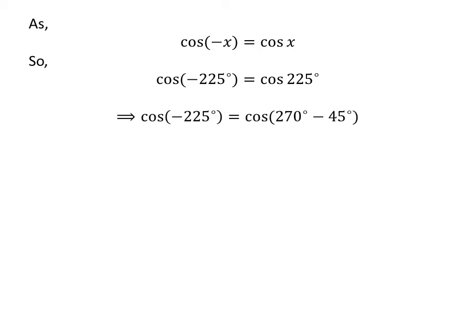As 225 degrees is equal to 270 degrees minus 45 degrees, cosine of minus 225 degrees is equal to cosine of 270 degrees minus 45 degrees.